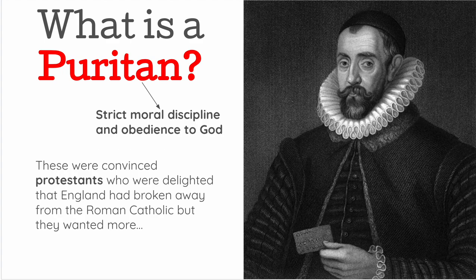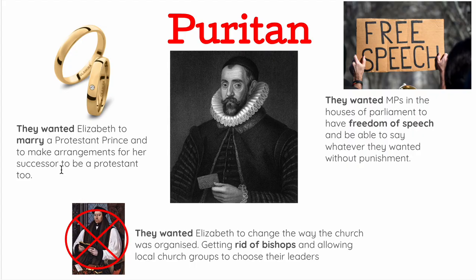The Puritans spoke up in Parliament regularly because they wanted three things. They wanted Elizabeth to marry a Protestant prince and to make arrangements for her successor to be a Protestant too, because they didn't want a Catholic on the throne. They also wanted MPs to have freedom of speech in the Houses of Parliament — to say whatever they wanted without punishment. Additionally, they wanted Elizabeth to change the way the church was organised, getting rid of bishops and allowing local church groups to choose their own leaders.